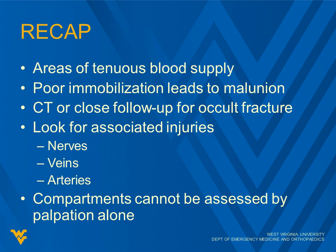A recap of our high-risk areas or injuries: there are some areas of tenuous blood supply in the body — we need to be cognizant of that and especially look at those for fractures. We know that poor immobilization leads to malunion. That's on us — we need to be diligent about that, or at least assure close follow-up.